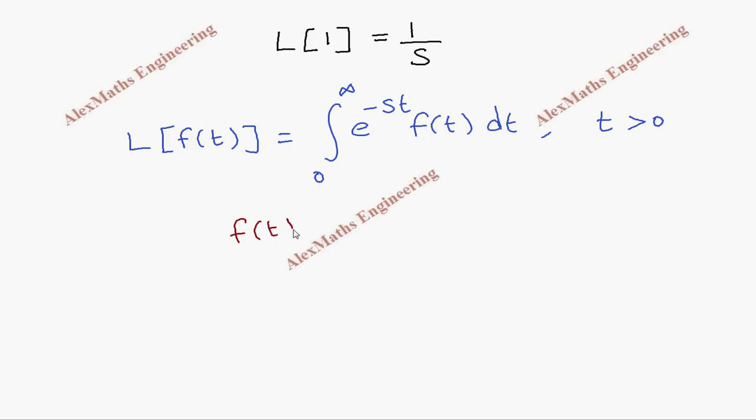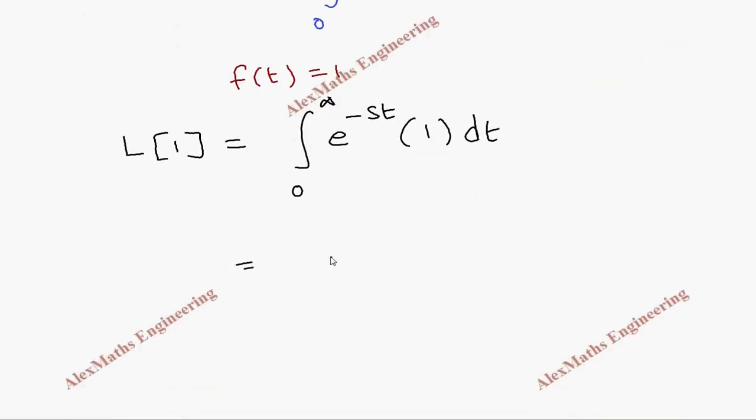When we substitute we get L of 1, which we are going to find, and by formula it is integral 0 to infinity e power minus st into 1 dt. So finally we have integral 0 to infinity e power minus st dt.